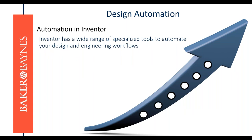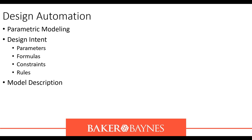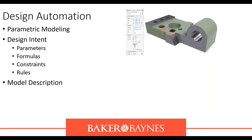At a fundamental level, design automation in 3D modeling uses specialized tools available in Autodesk Inventor. Inventor has a wide range of specialized tools to automate your design and engineering workflows. Using Inventor is not just about moving from a 2D world to 3D — it's about designing your concepts and ideas more efficiently. Design intent enables you to predict how your parts and assemblies will behave. Inventor provides an opportunity to describe your model and build intelligence into it so that inevitable changes happen the way you expect.